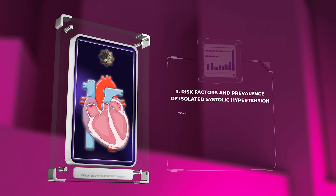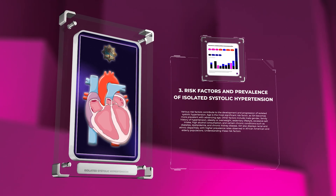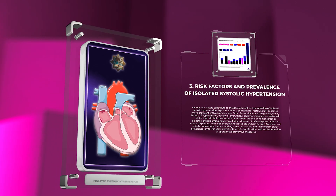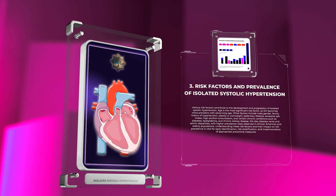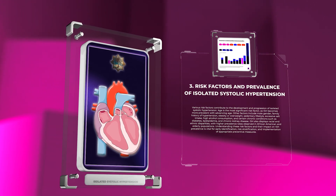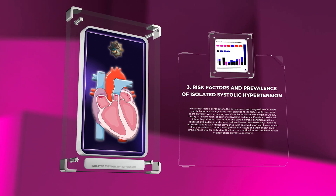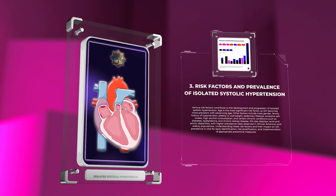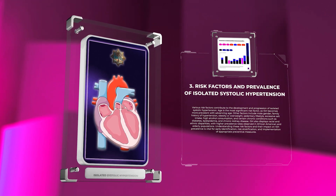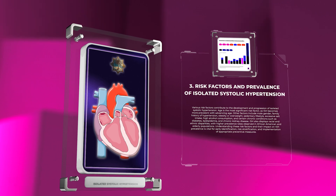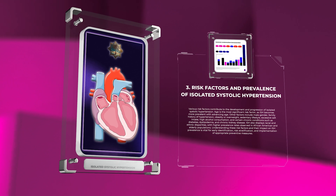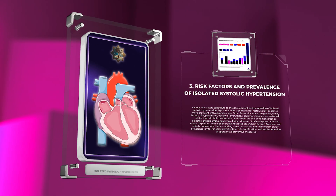Various risk factors contribute to the development and progression of isolated systolic hypertension. Age is the most significant risk factor, as ISH becomes more prevalent with advancing age. Other factors include male gender, family history of hypertension, obesity or overweight, sedentary lifestyle, excessive salt intake, high alcohol consumption, and certain chronic conditions such as diabetes, dyslipidemia, and chronic kidney disease. ISH also displays racial and ethnic disparities, with higher prevalence rates observed in African American and elderly populations. Understanding these risk factors is vital for early identification, risk stratification, and implementation of appropriate preventive measures.